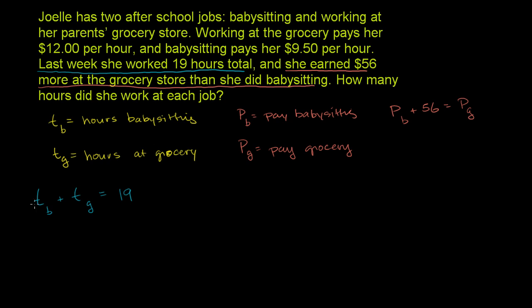We have four unknowns and only two equations, which isn't enough. But we can express the pay variables in terms of the time variables, giving us two equations with two unknowns. The other information given is the rate: working at the grocery she makes $12 per hour, and babysitting she makes $9.50 per hour.